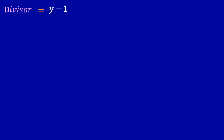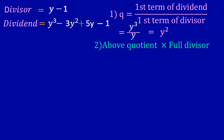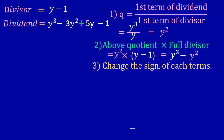Our divisor is y minus 1 and our dividend is y³ minus 3y² plus 5y minus 1. Applying rule one — first term of dividend upon first term of divisor — we get y³ divided by y, which simplifies to y². For rule two, we multiply the quotient y² by the full divisor y minus 1, giving us y³ minus y².